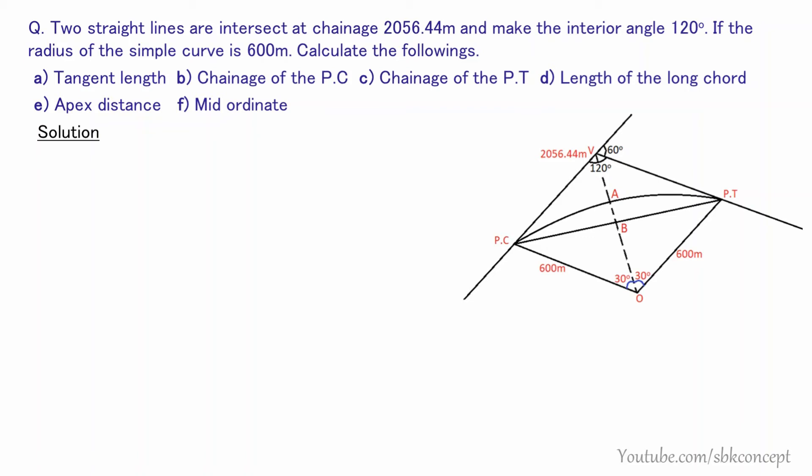Hello guys, today I am going to show you a video of Surveying Horizontal Curve Setting — a chapter numerical. Two straight lines intersect at a chainage and make an interior angle of 120 degrees. If the radius of the simple curve is 600 meters, calculate the following.